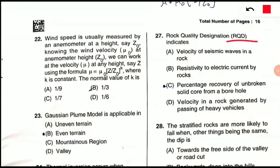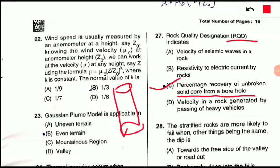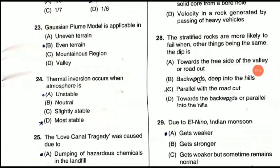Question 27: Rock Quality Designation (RQD) indicates what? The correct option is C — percentage recovery of unbroken solid core from a borehole. RQD denotes the percentage of intact (unbroken) rock retrieved from a borehole. Note: it is Rock Quality Designation, not Rock Quality Design.